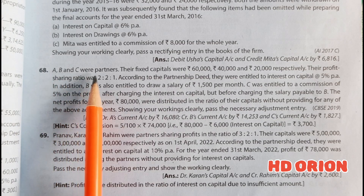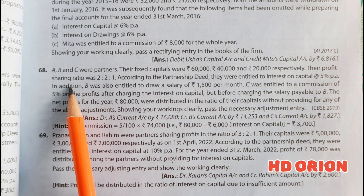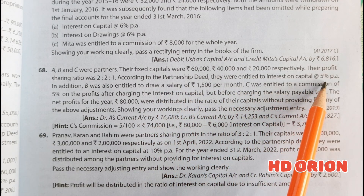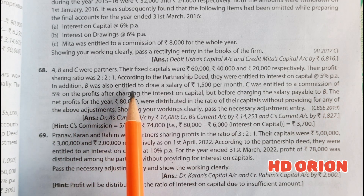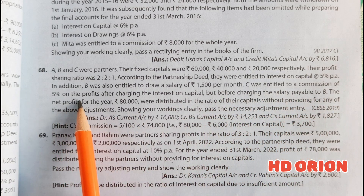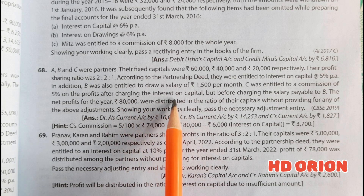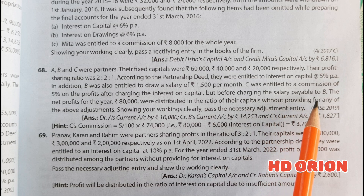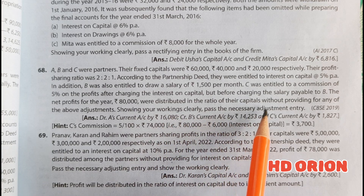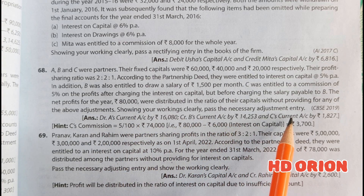Q68. A, B and C were partners. Their fixed capitals were Rs. 60,000, Rs. 40,000 and Rs. 20,000 respectively. Their profit sharing ratio was 2:2:1. According to the partnership deed, they were entitled to interest on capital at 5% per annum. In addition, B was entitled to a salary of Rs. 1,500 per month. C was entitled to a commission of 5% of the profit after charging interest on capital but before charging the salary payable to B. The net profit of Rs. 80,000 was distributed in the ratio of their capitals without providing for any of the above adjustments. Pass the necessary adjustment entry.